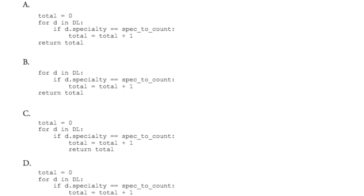So next, if we look at A, we have total = 0. So for D in DL, so that's for doctor in doctor_list. If D.specialty, which is the correct way to grab that information from a named tuple, is equivalent or == to spec_to_count, which is the name of the string which is the specialty, then we're going to add one to total and then we're going to return that total. So far that looks correct and that looks to be the correct answer. But we can't knock C or D out. So we're going to look at C. So total += 0, for D in DL. If D.specialty is equivalent to spec_to_count, total += total + 1, and then in the if statement it returns the total. So the problem with this is once you find one doctor with the same specialty, it's going to add to the total and it's going to return that total. So no matter what, this will always return the value one. So C is incorrect.